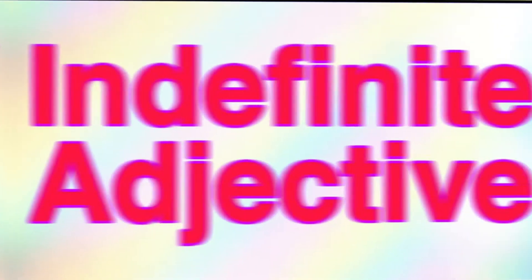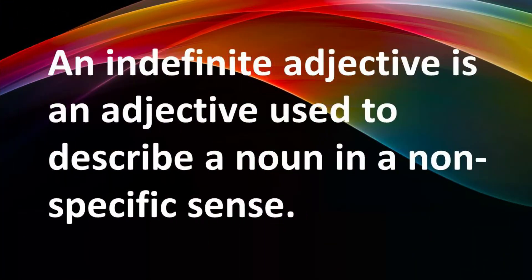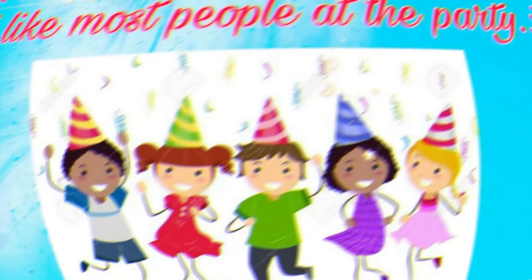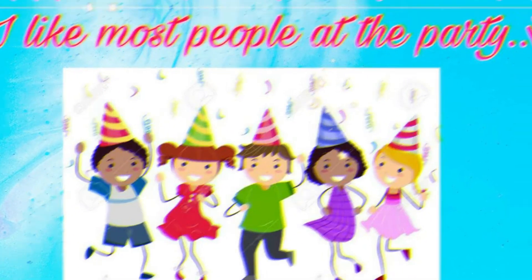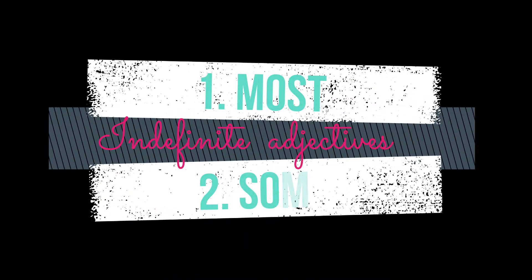What are indefinite adjectives? An indefinite adjective is an adjective used to describe a noun in a non-specific sense, like some, any. For example: 'I like most people at the party.' 'Some mice have chewed the cables.' Here, words like most and some signify indefinite adjectives.